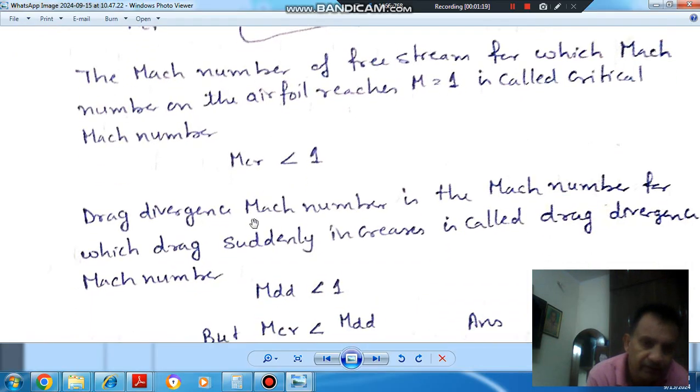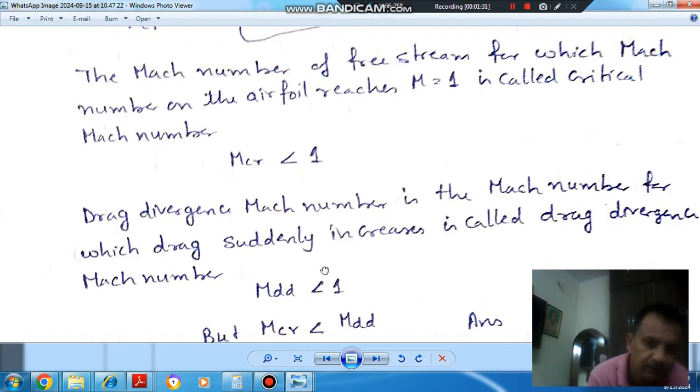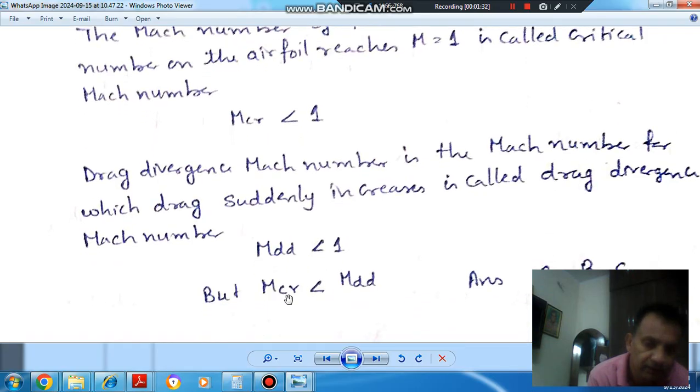Drag divergence Mach number is the Mach number for which drag suddenly increases. When the Mach number is increasing, this Mach number is also less than 1. But the critical Mach number is less than the drag divergence Mach number. So MCR is less than MDD, and both are less than 1.